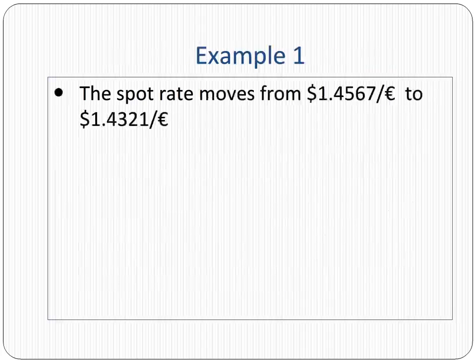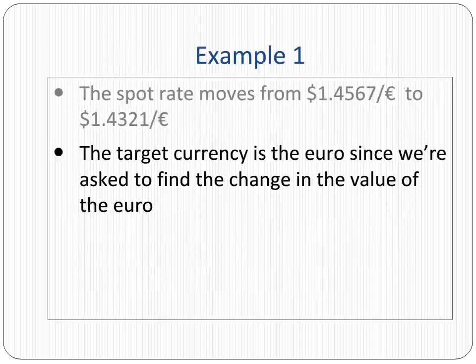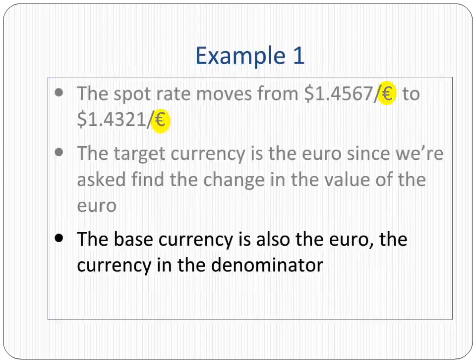In the first example, the rate moves from 1.4567 dollars per euro to 1.4321 dollars per euro. Here the target currency is the euro, since we are asked to find the change in the value of the euro. The base currency is also the euro — that is, the currency in the denominator.